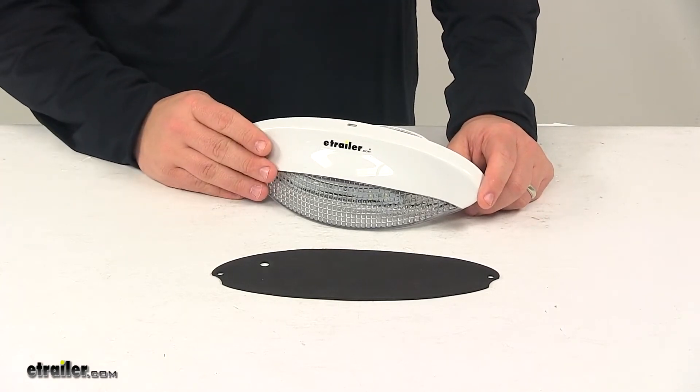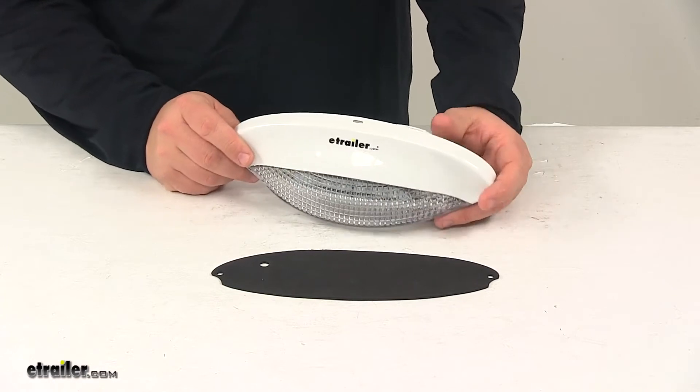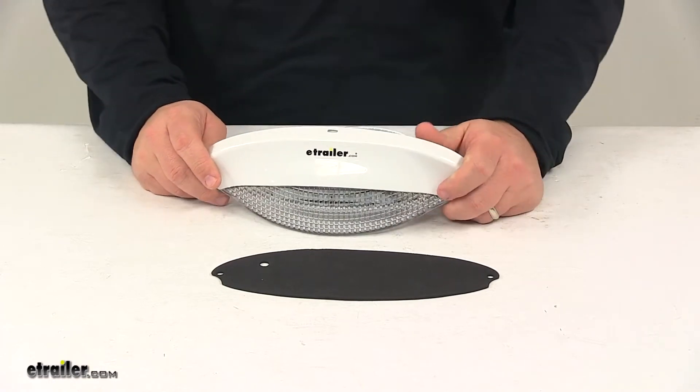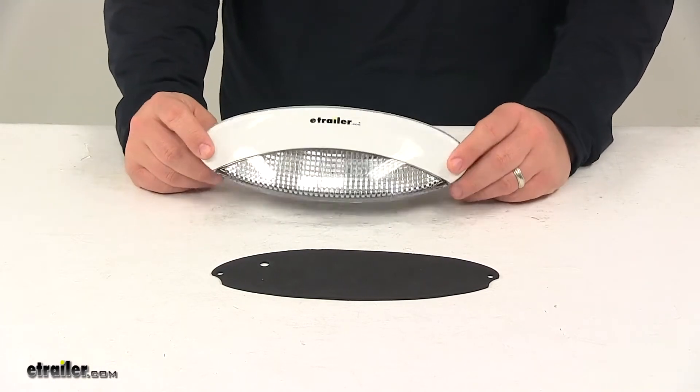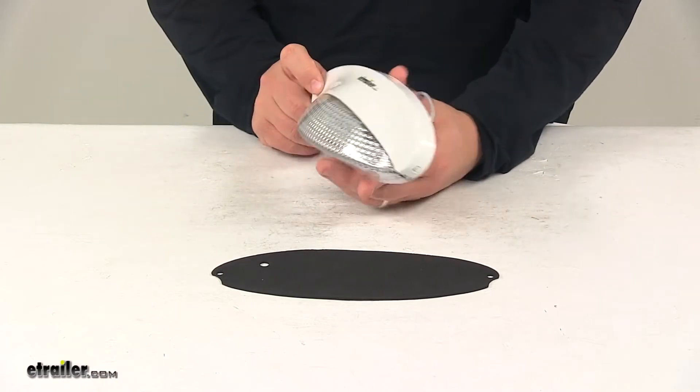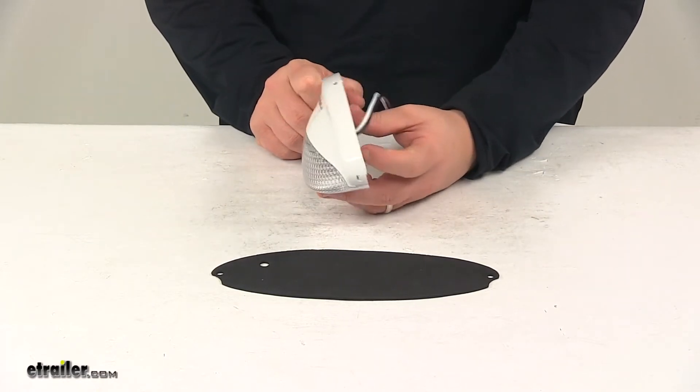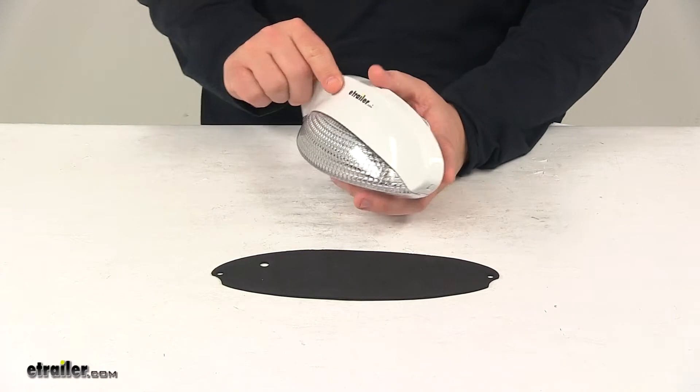Today we're taking a look at an exterior LED porch light. This is great for replacement of an existing porch light or for new applications. It is a Euro style design which gives it a really nice appearance, a really nice look.